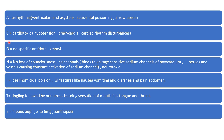'C' stands for cardiotoxic — it will cause hypertension, bradycardia, and cardiac rhythm disturbances. 'O' stands for no specific antidote, and KMnO4 is used for decontamination — gastric lavage is done with the help of KMnO4.